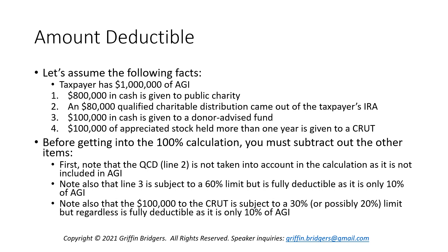Line 3 — the $100,000 to the donor-advised fund — is subject to a 60% limit, not the 100% limit, because contributions to donor-advised funds don't qualify for the 100% deduction. However, since this amount is only 10% of AGI, it will be fully deductible. Similarly, line 4 — the $100,000 in securities to the CRUT — is subject to a 20% or 30% AGI limit and can't use the 100% limit since it's a contribution in kind, not cash or check. Since it too is only 10% of AGI, it will be fully deductible in 2021.